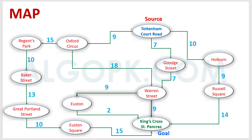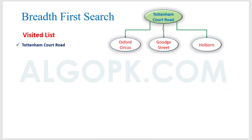We start from the source node and get the next reachable nodes. From this node, only these three nodes are reachable. We create a tree like that, and add the current visiting node to the visited list. Then we start from left and go to right.